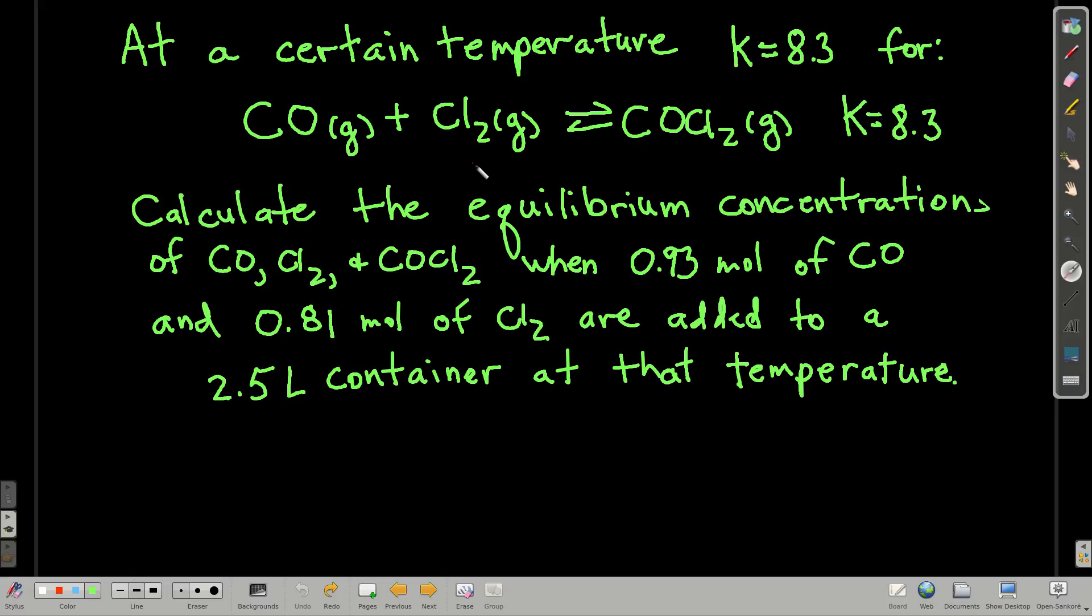We want to calculate at equilibrium what the concentrations of everything present in this container are: carbon monoxide, chlorine, and our product here. So let's say we put 0.93 moles of carbon monoxide and 0.81 moles of chlorine gas into this 2.5 liter container at whatever temperature K is equal to 8.3.